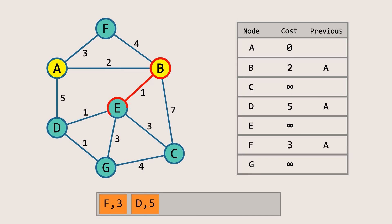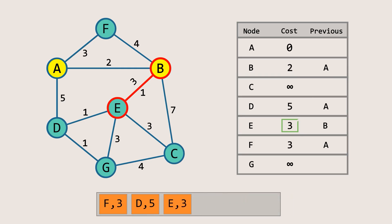Now, getting to node E via B costs 3, which is less than infinity, so we will update it, set the previous node to B, and push E onto the priority queue with priority 3. Similarly, the cost to reach C via B is 9, which is less than infinity, so we update it to 9, set the previous node to B, and insert C into the queue along with the cost.